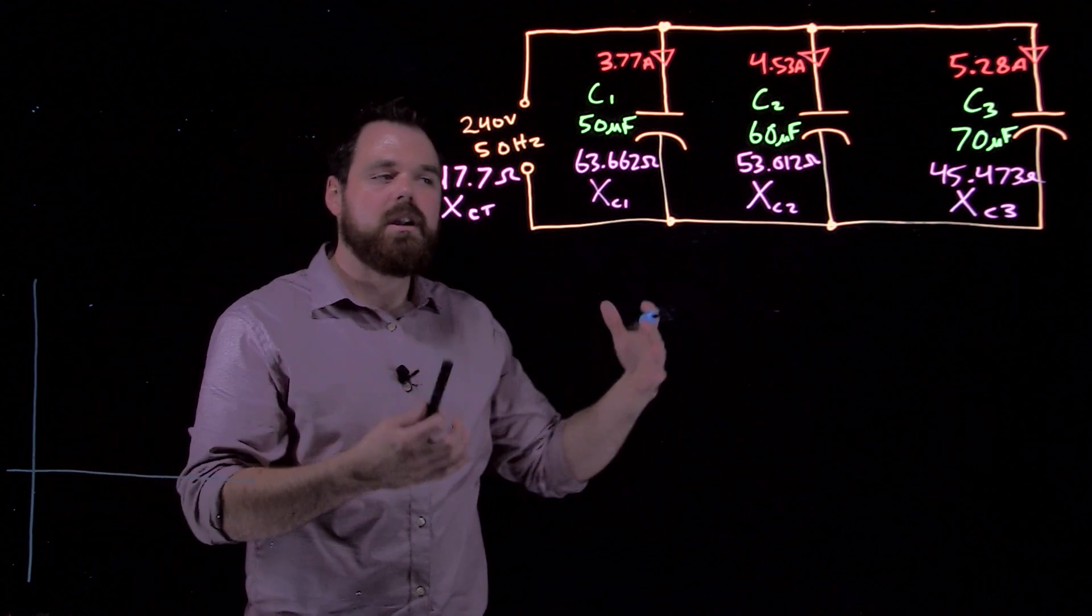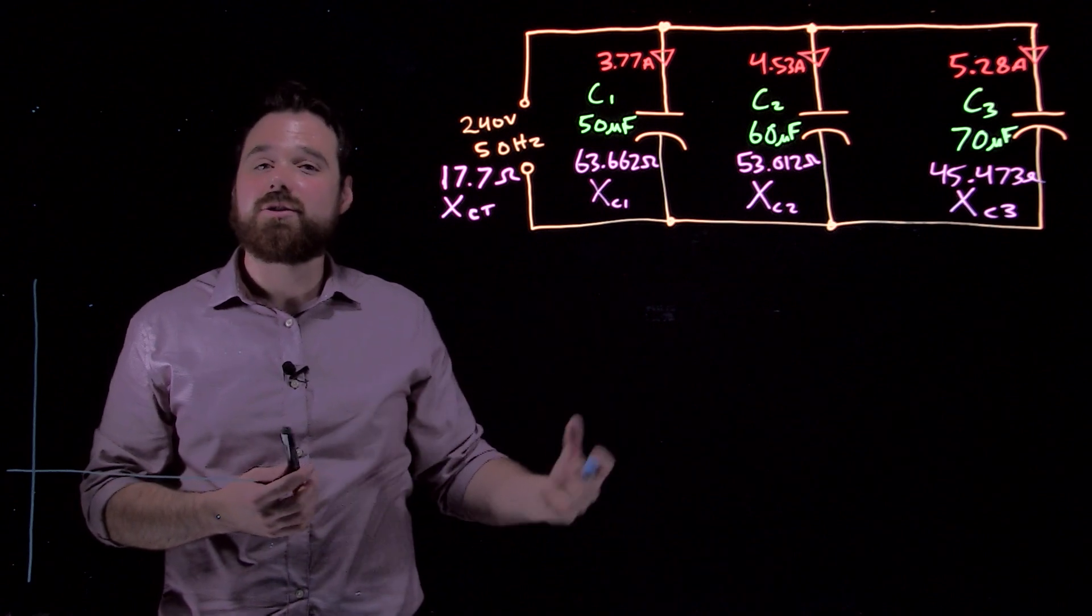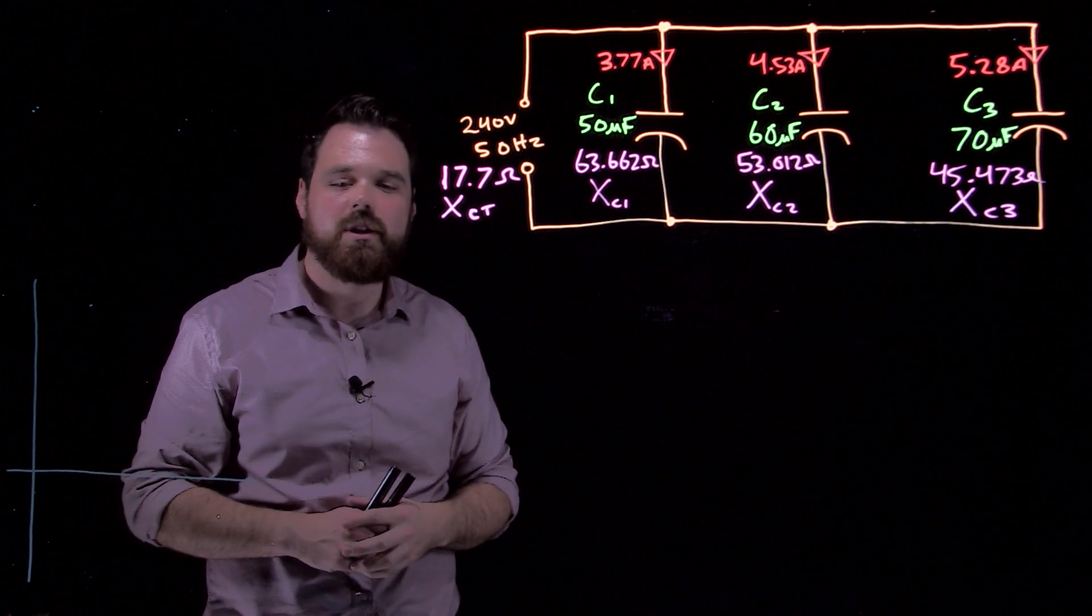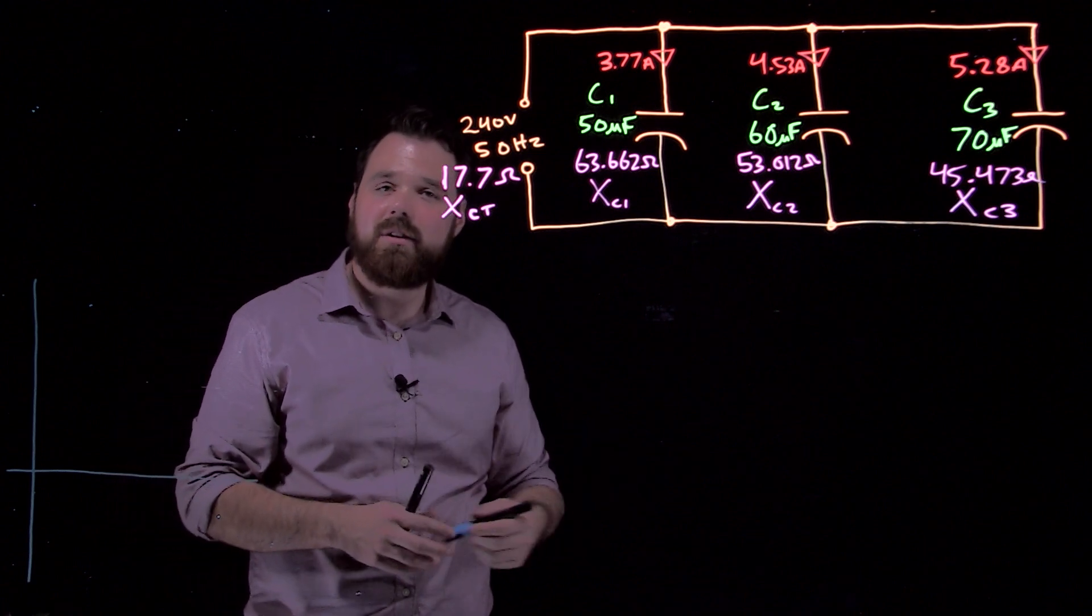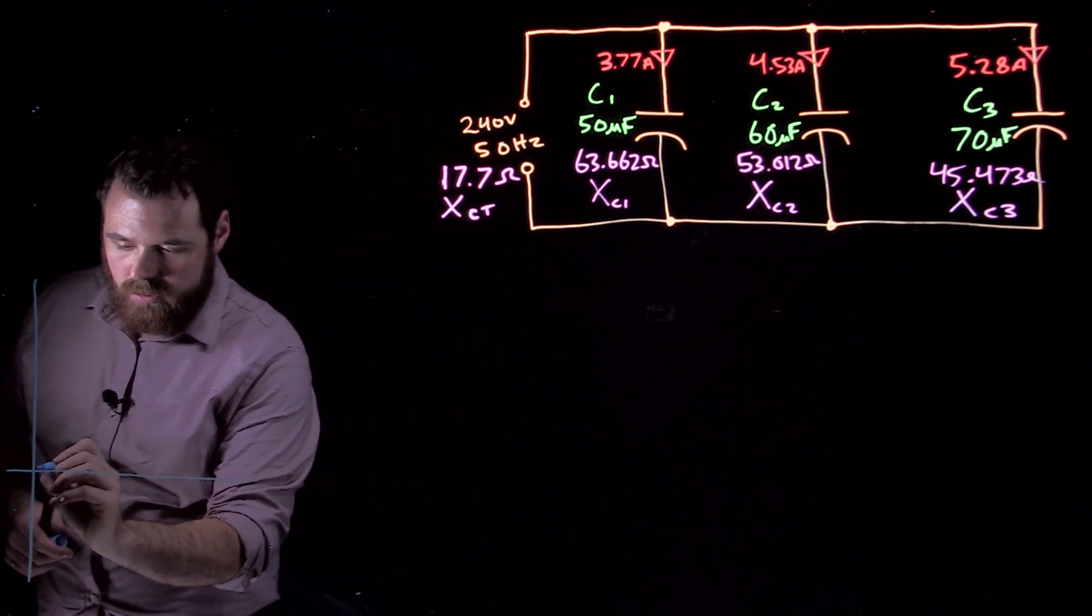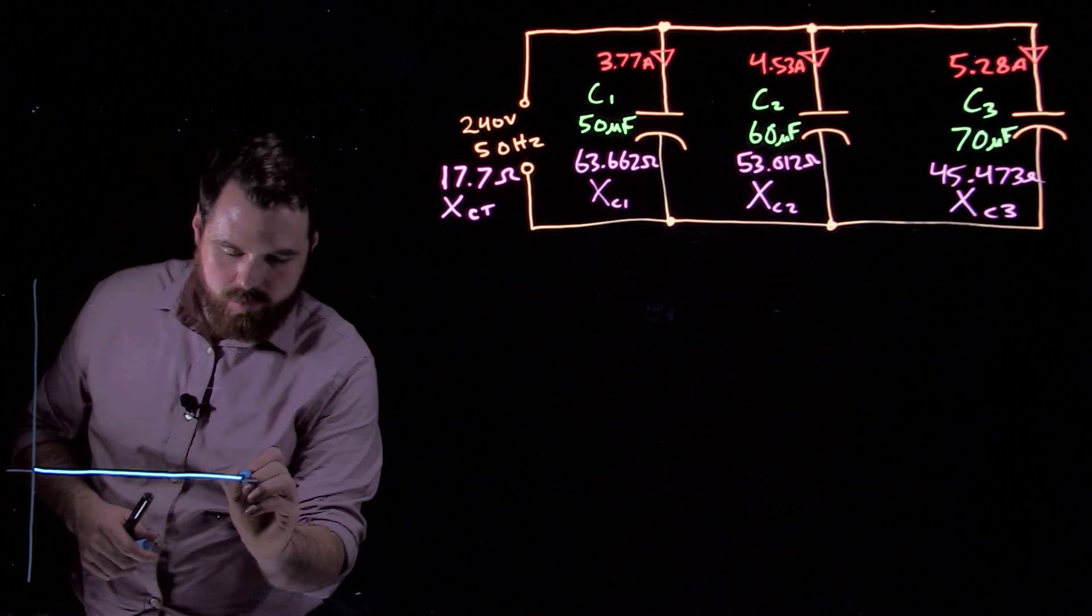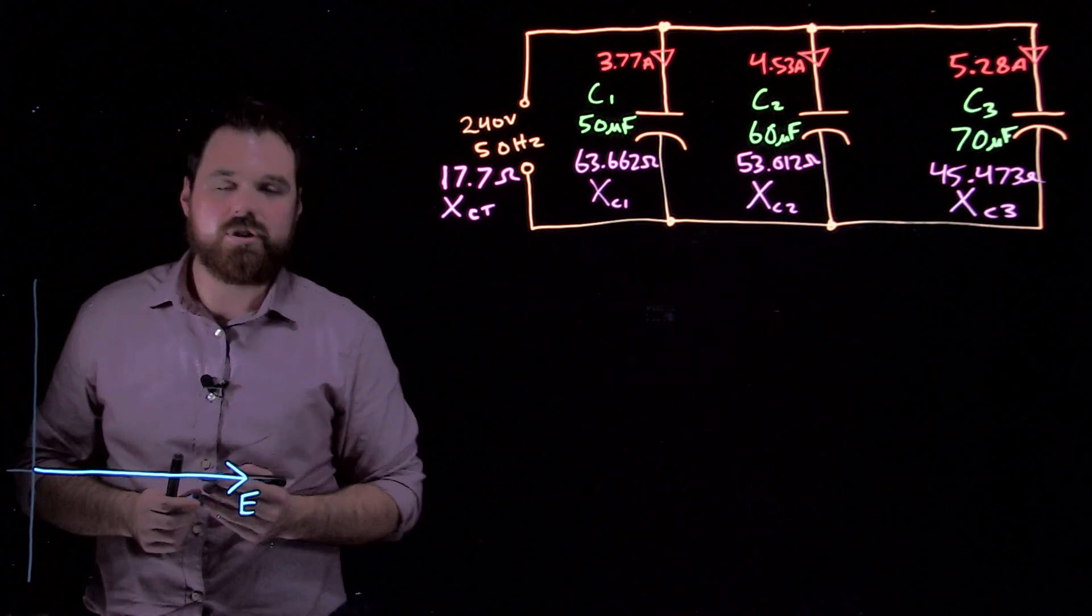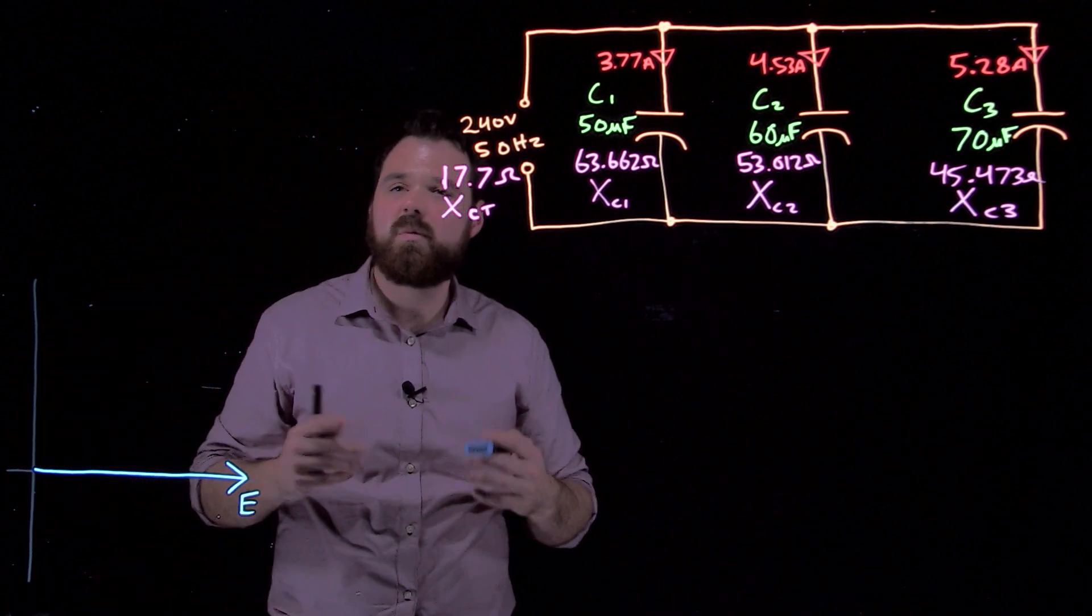In an AC circuit when we're taking all this information to a phasor diagram, which can be very helpful for us to store our information and see those phase relationships, we're actually now in a parallel circuit going to put voltage as our reference line. That voltage is the same throughout the circuit, we can use it as a reference.